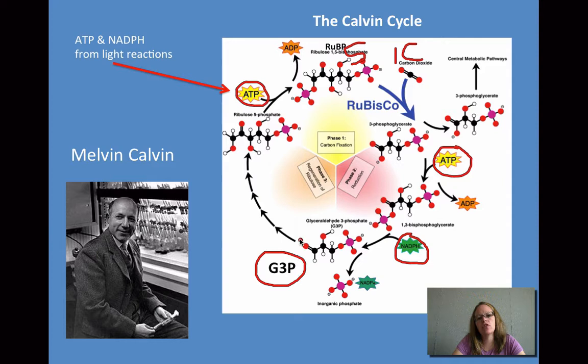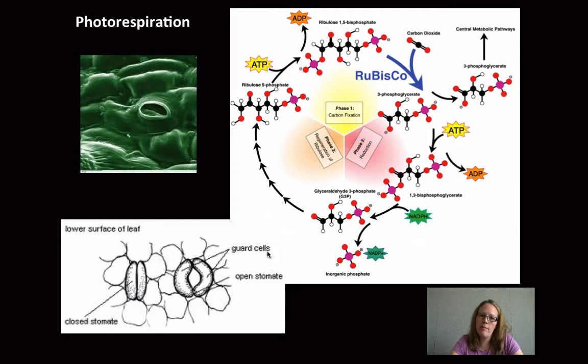Not all of the G3P is used to assimilate carbohydrates. Some of it is actually recycled into what we started with, the RUBP, that 5-carbon molecule, so that we have the cycle, which is why it's called the Calvin cycle. Main things here is we need ATP and NADPH from the light reaction, and we're fixing carbons. We're making a very important molecule to the plant called G3P that can be used for many of the cellular processes that the plant goes through.